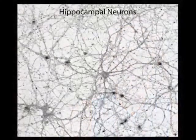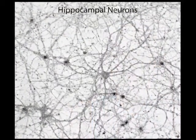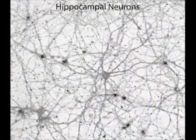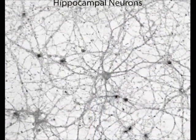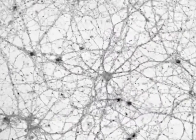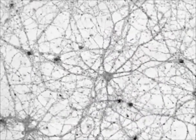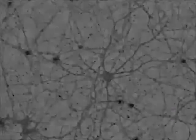We found progranulin binds to neurons with high affinity, suggesting there is a specific progranulin binding partner on the neuronal cell surface.